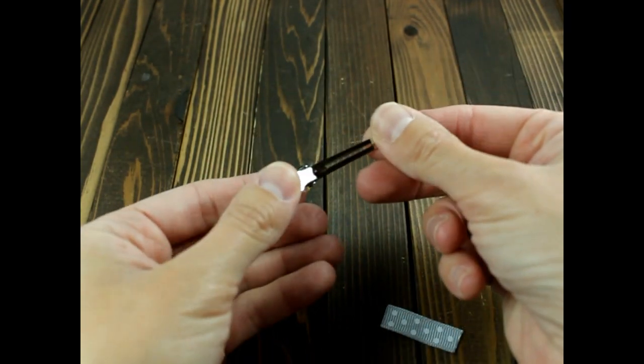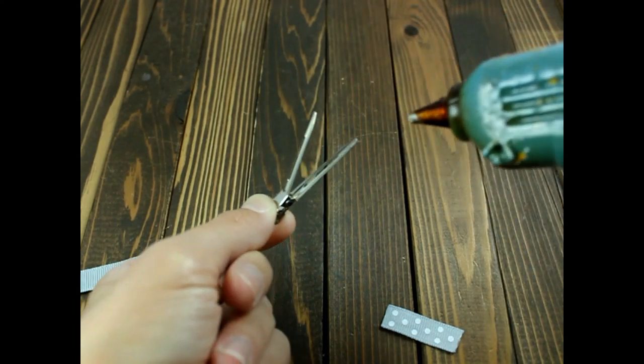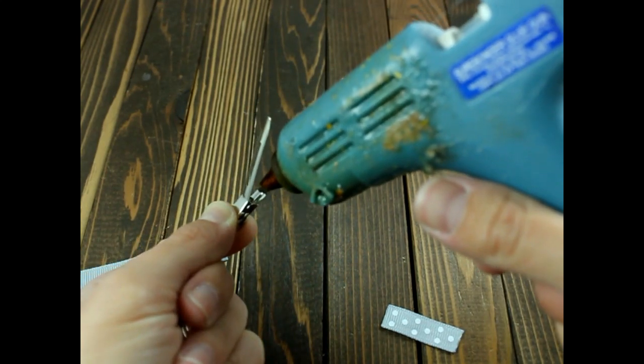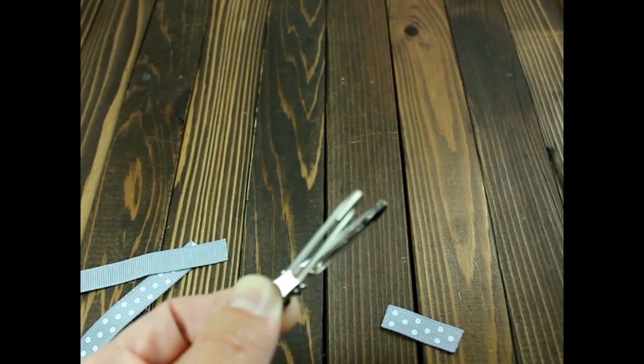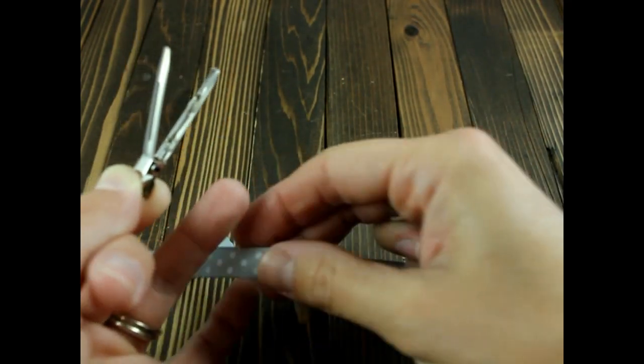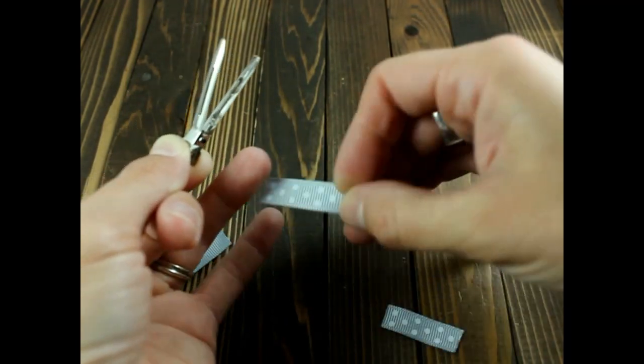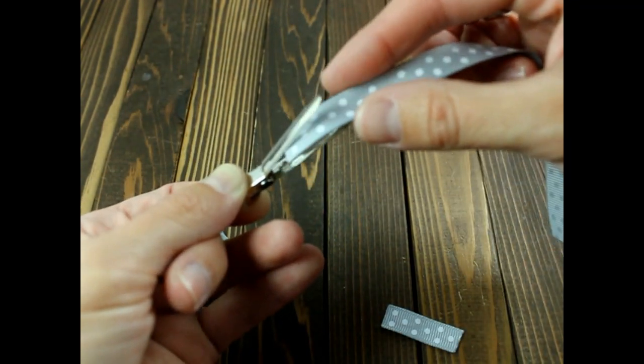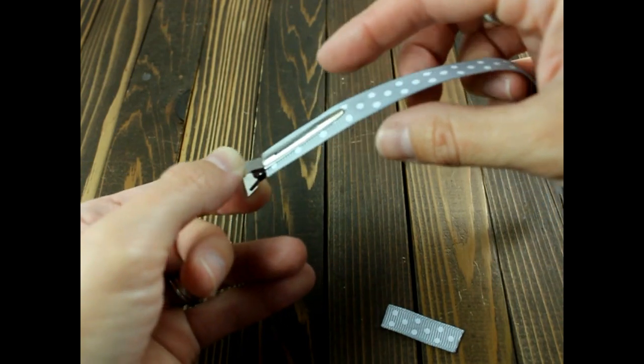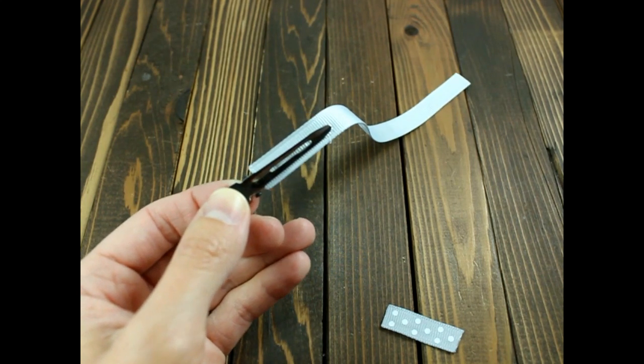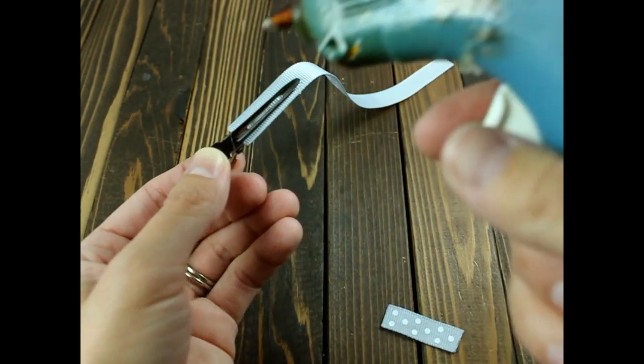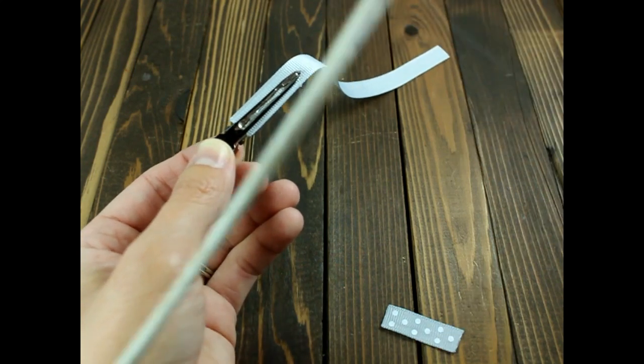Next, you will get your alligator clip and then we're going to go ahead and line our alligator clip. Get my hot glue and you just put some glue in the center, and get your long piece, flip it around, and put some more glue down.